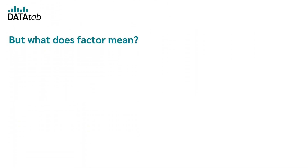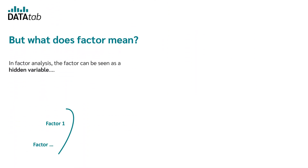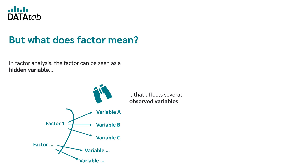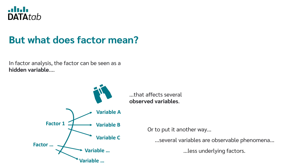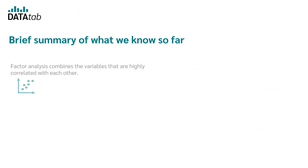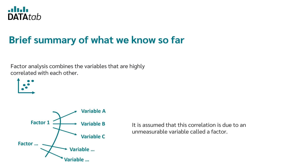Let's talk about what 'factor' means. In factor analysis, the so-called factor can be seen as the hidden variable influencing several actually observed variables. Therefore, we have our observed variables on one side and behind them we have factors that influence these variables. In other words, several variables are observable phenomena of fewer underlying factors. In summary, factor analysis combines variables that are highly correlated with each other, and it is assumed that this correlation is due to an unmeasurable variable called a factor.